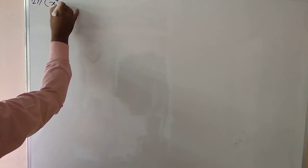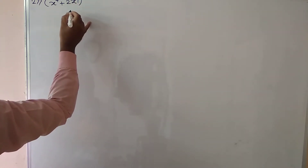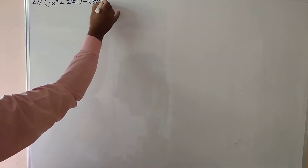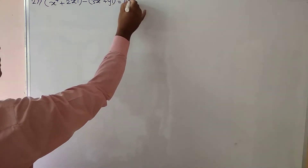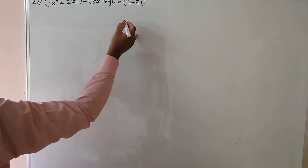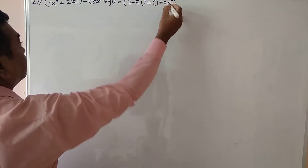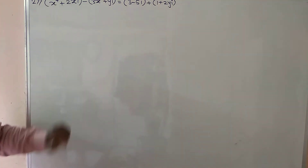We have to find out real values of x and y which satisfy the equation x⁴ + 2xi - 3x² + yi = 3 - 5i + 1 + 2i. This is the given equation, and it is based upon equality of complex numbers.